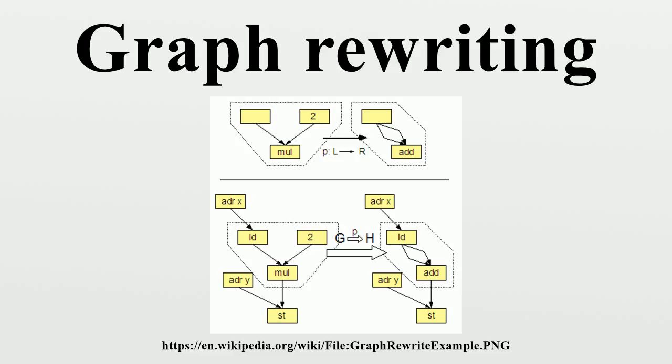A rewriting step or application of a rule R to a host graph G is defined by two push-out diagrams both originating in the same morphism, where D is a context graph. Another graph morphism models an occurrence of L in G and is called a match.